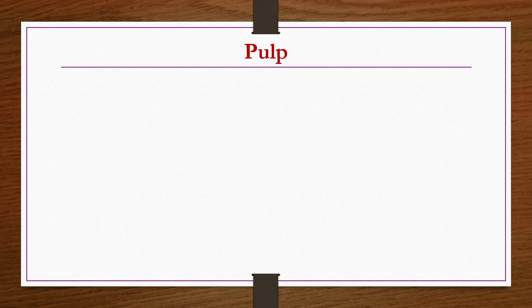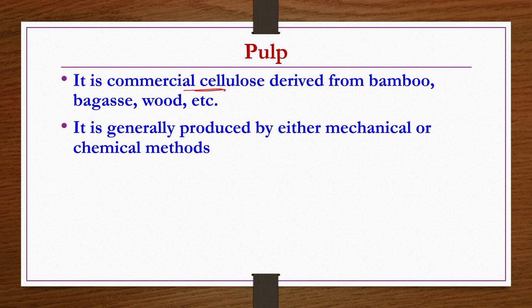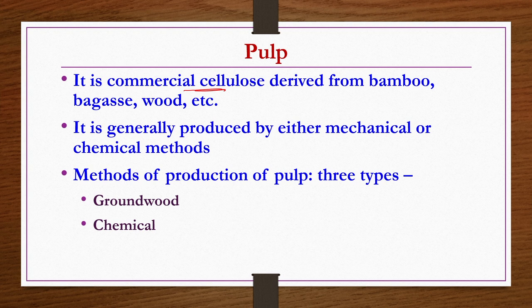Pulp is commercial cellulose derived from bamboo, bagasse, wood, etc. It is generally produced by mechanical or chemical methods. There are three methods available: the ground wood method, which is the mechanical method where only mechanical methods are involved and no chemical treatments; the chemical method, where some chemical treatment is required to get required fibers from the wood; and the semi-chemical method, where only partial chemical treatment is used followed by mechanical methods.